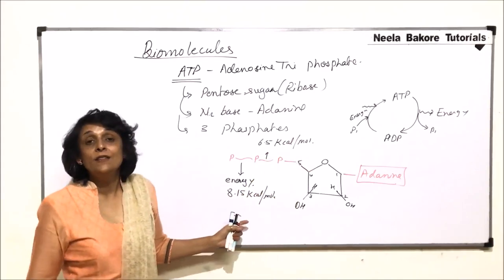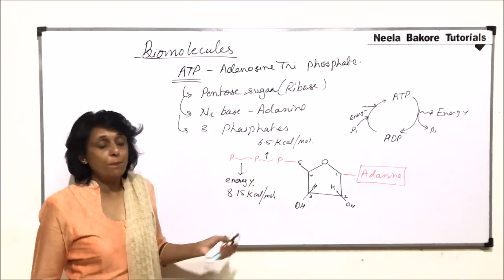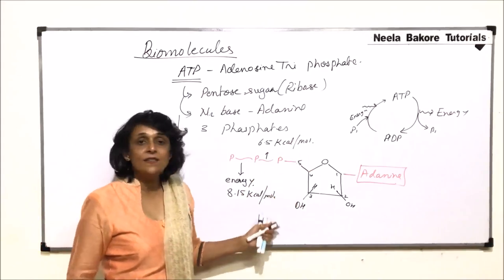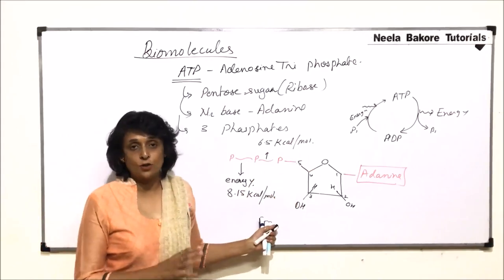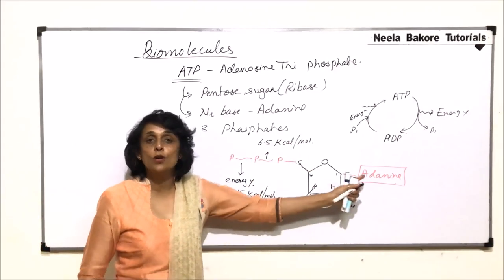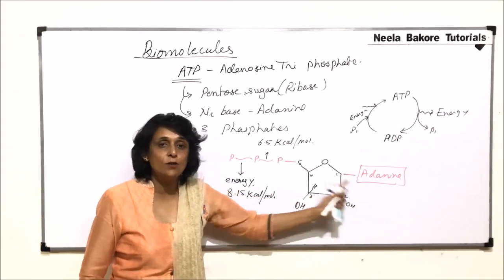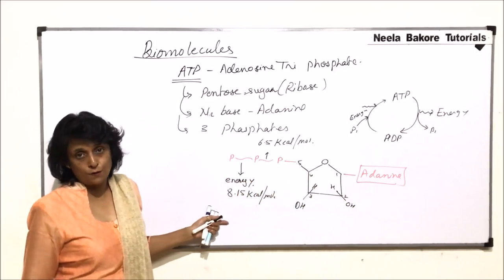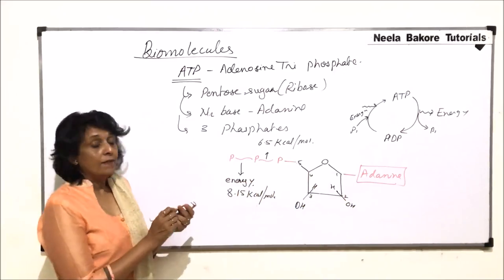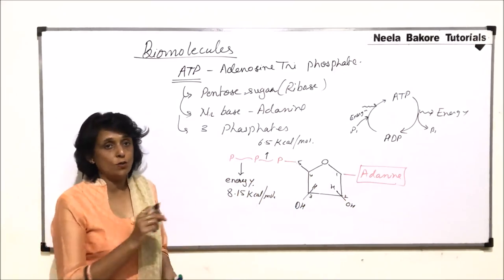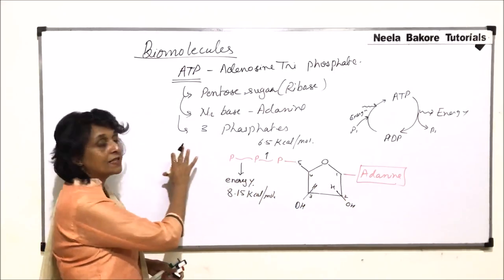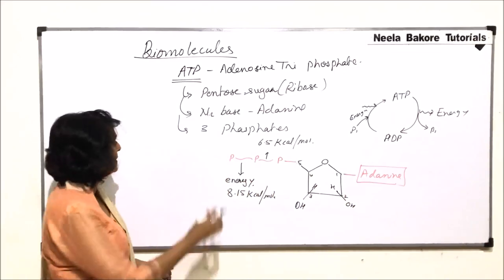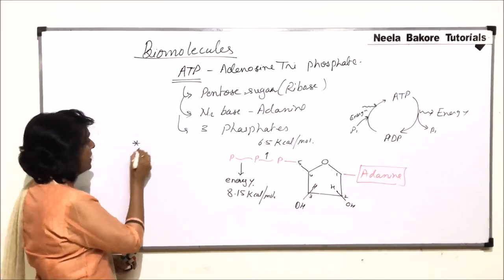This is how ATP works. To summarize, ATP has three components: ribose sugar, adenine as the nitrogen base, and three phosphates. Let us now talk about two scientists who have made a very significant contribution related to this ATP molecule.